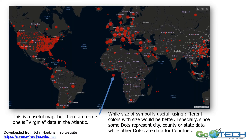Anytime you do data, things can happen. There is a dot in the middle of the South Atlantic Ocean, and looking at the dataset, it's actually Virginia — probably just a missing minus sign on the latitude and longitude. These data were compiled so quickly and are so useful that minor things should be overlooked. But after you've created your map, give it a really good close look for accuracy and any issues or problems.